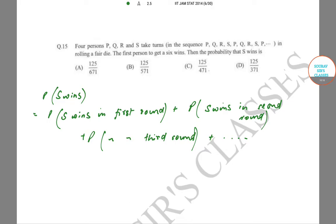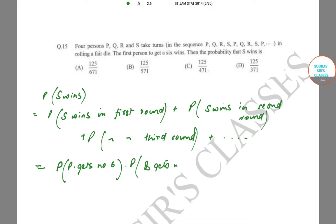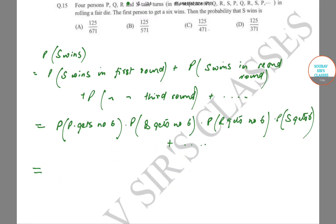These are disjoint events, so we sum their probabilities. The probability that S wins in the first round is: P(P gets no 6) × P(Q gets no 6) × P(R gets no 6) × P(S gets a 6) = (5/6)³ × (1/6).